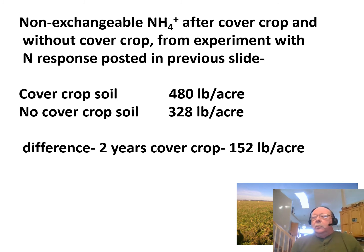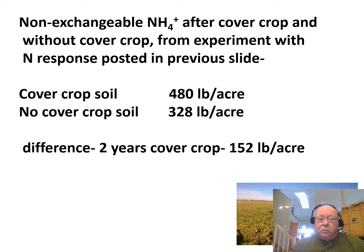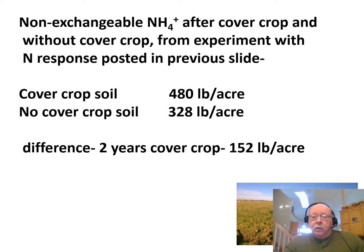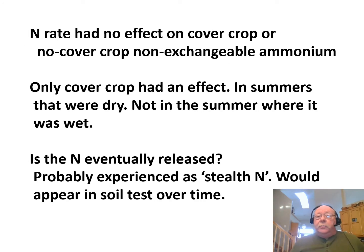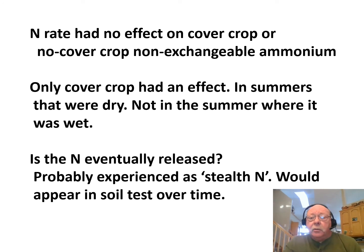One thing I did that year that I hadn't done before was run non-exchangeable ammonia on fall soil samples — not a standard test, it's a fussy and expensive test. The difference in non-exchangeable ammonia we found after two years of cover crops — one after wheat and one interseeded in corn — was 480 pounds per acre, compared to 328 pounds where there was no cover crop. The difference was 152 pounds — that's where the nitrogen appears to be going. The nitrogen rate we used had no effect on non-exchangeable ammonia; only the cover crop treatment mattered. In dry summers we see this effect; in wet summers we don't.